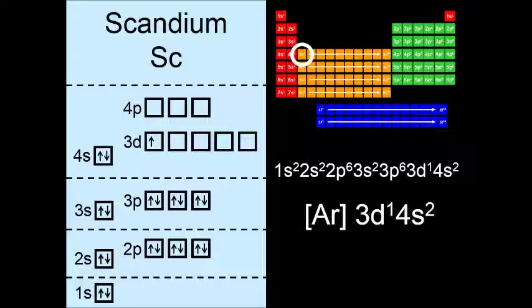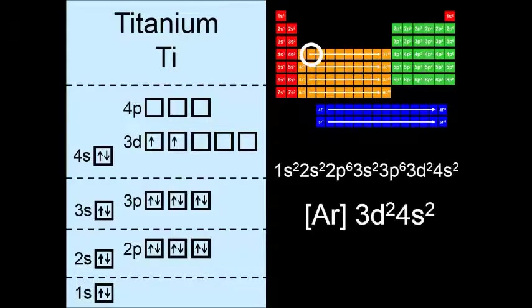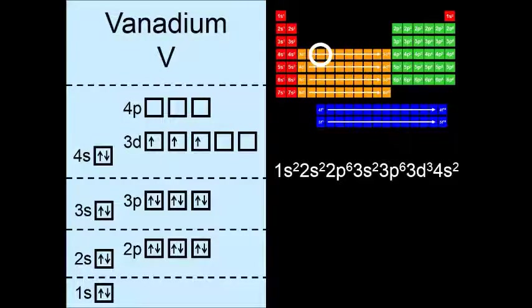It doesn't really matter which order in which you write them. But I tend to put the highest energy level last. So 4s2 3d1 would be just fine. This is titanium. And then after titanium, we have vanadium.